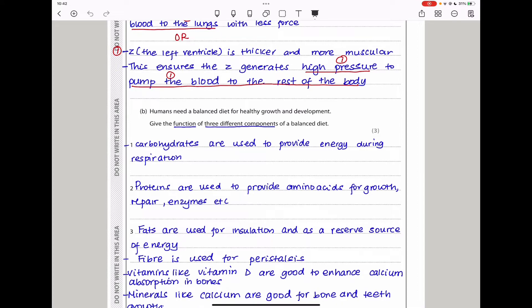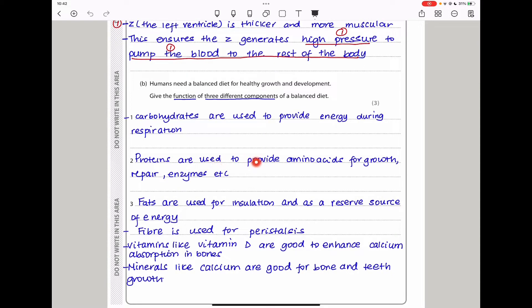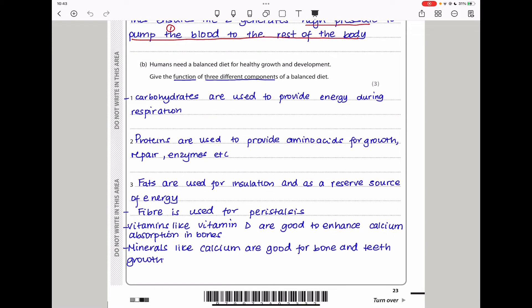Next they say humans need a balanced diet for healthy growth and development. Give the function of three different components of a balanced diet. A balanced diet contains carbohydrates, which are a source of energy for respiration. Proteins are used to provide amino acids for growth, repair, and production of enzymes. Fats are used for insulation and as a reserve source for energy. There is also fiber, used for peristalsis so food can move through the digestive system. Vitamins, for example vitamin D helps our bones to absorb calcium. And minerals, for example calcium, which is good for bone and teeth growth.